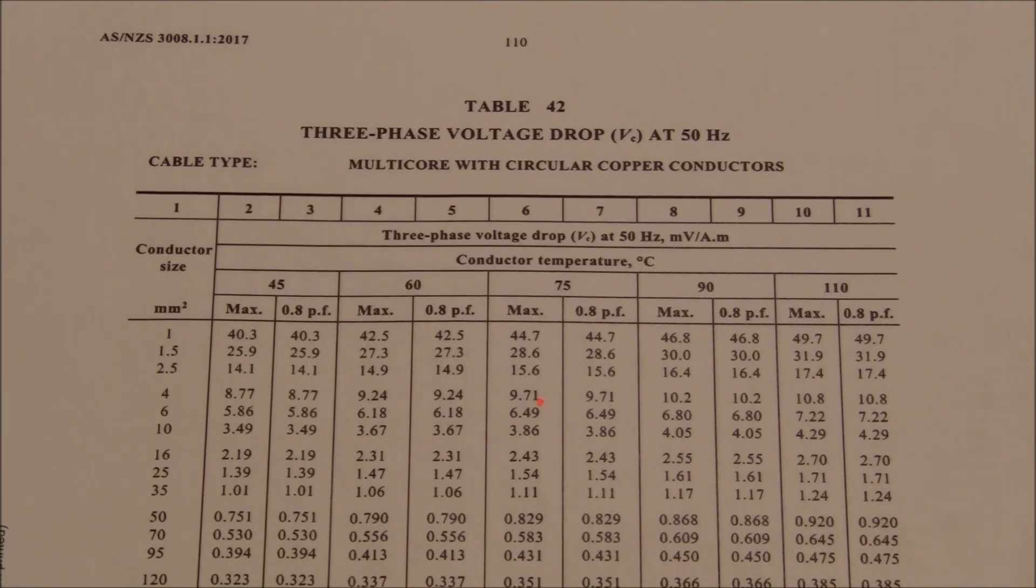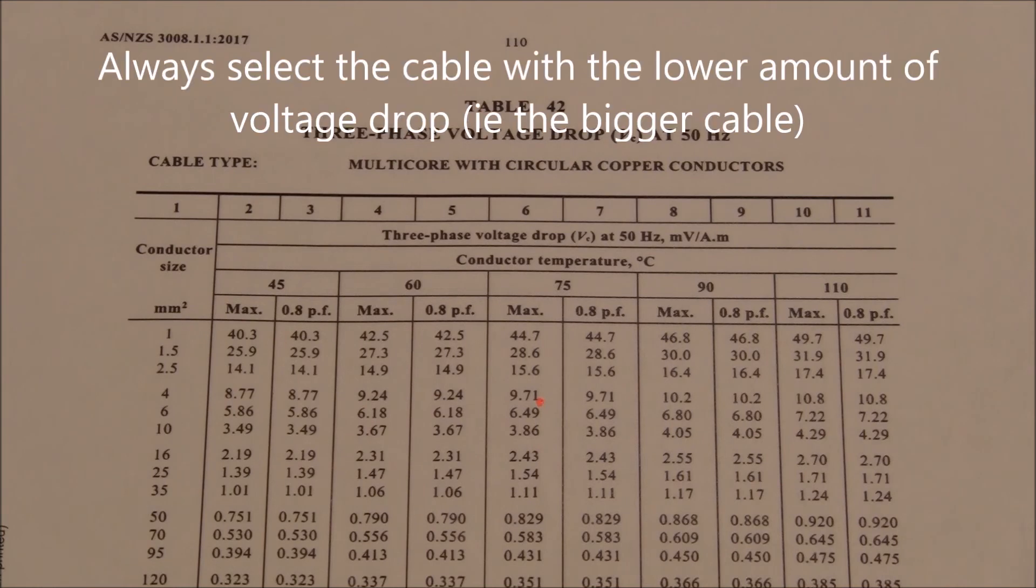This means that 4 millimetre square has too high a value of voltage drop, so we will move down to 6 millimetre squared.